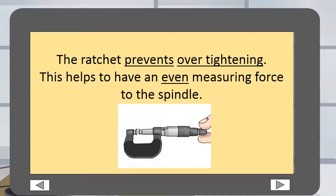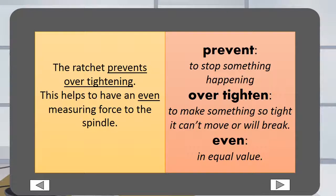The ratchet prevents over-tightening. This helps to have an even measuring force to the spindle. Prevent means to stop something happening. Over-tighten means to make something so tight it can't move or will break. Even means in equal value.